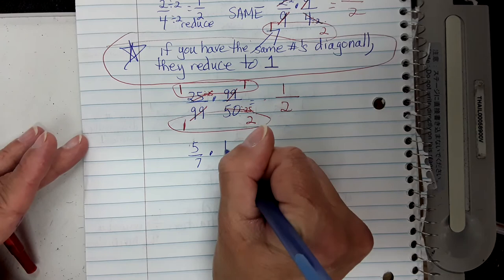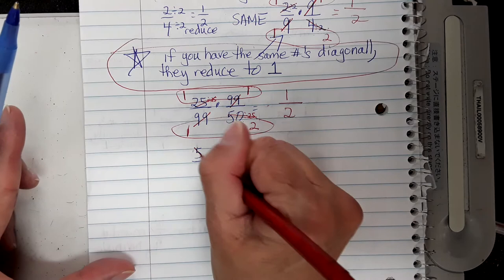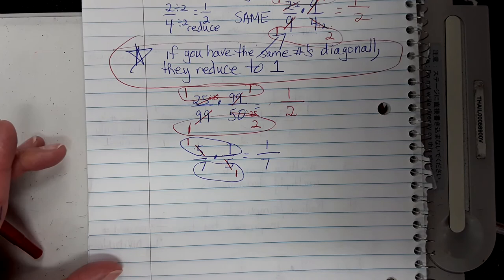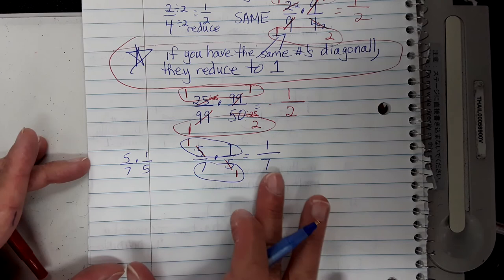Try this: 5 sevenths times 1 over 5. Pause and try it. Hopefully you saw that the fives are diagonal — they're the same, so change them to ones. Now multiply: 1 times 1 is 1, and 7 times 1 is 7. Your answer is 1 over 7. Without cross-reducing, you would have had 5 over 35 and then had to reduce it. This is easier.